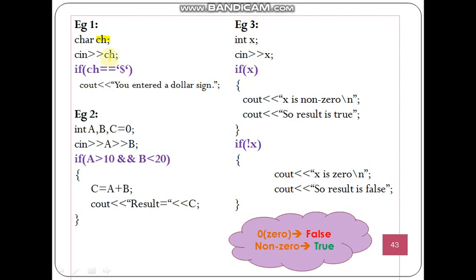Let's see some examples. Here, ch is a variable holding characters. We have inputted the character and within this if we are checking ch == '$'. If this is true then a message will be displayed, otherwise no message will be displayed. In the second example, if a > 10 and b < 20 - two relational operators joined by the logical AND (&&) - if this total expression evaluates to true, then c = a + b and a display will happen.